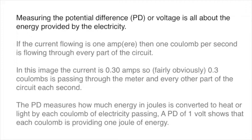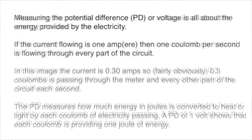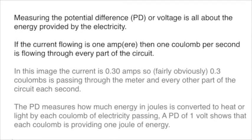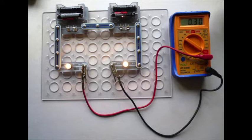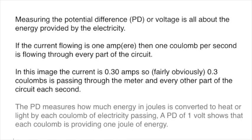Voltage or potential difference is all about the energy provided by the electricity. Electric current measured in amperes is about the rate of flow of electricity. So if a current of one amp is flowing, then one coulomb of electricity is flowing through every part of the circuit every second. So in this circuit where the current is 0.3 amps, it's fairly obviously 0.3 coulombs passing through every part of the circuit every second.